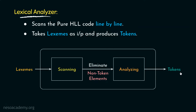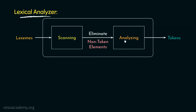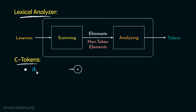Let me illustrate how the analyzing phase works with a few tokens of C. The keyword 'if' is a token. For recognizing 'if', the lexical analyzer requires a finite state machine (FSM). From the initial state A, seeing 'i' we move to state B, then from B seeing 'f' we end up in the final state C.